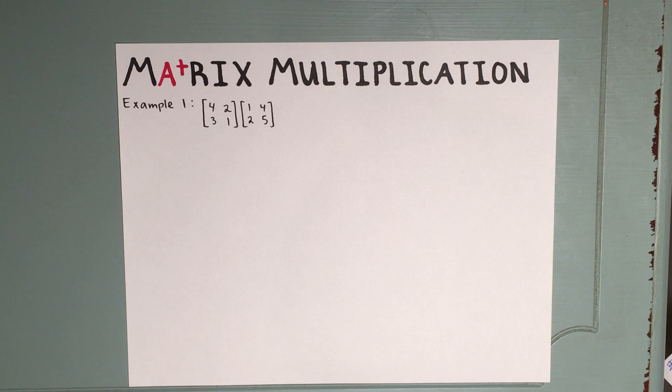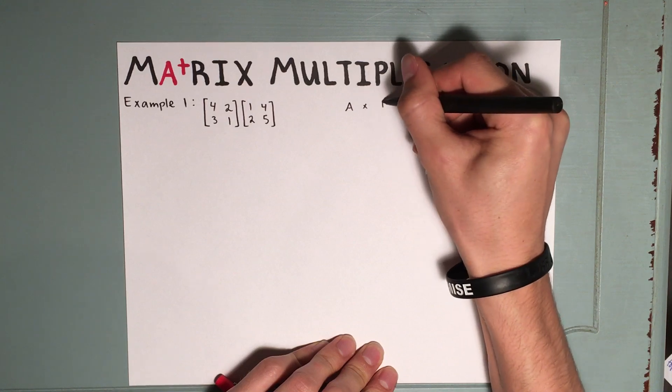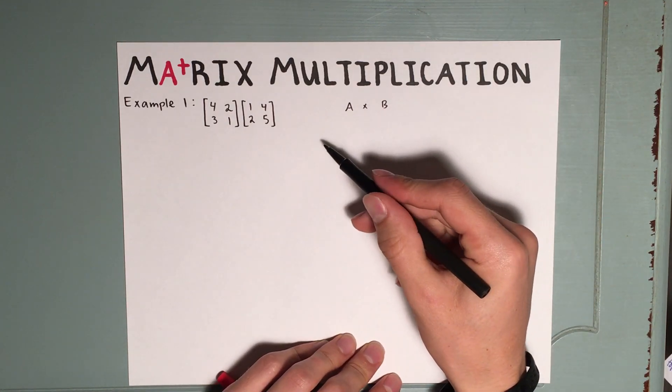Before we get started with an example, let's talk about when we're even allowed to multiply matrices. If we have matrix A times matrix B, we need to check that the inner dimensions are the same. You always write rows, then columns.